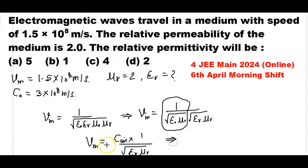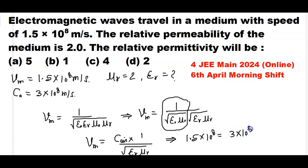Putting in the values: 1.5×10⁸ = 3×10⁸ / √(εr × μr), where the value of εr is to be calculated and the relative permeability μr is given as 2.